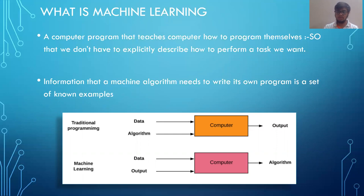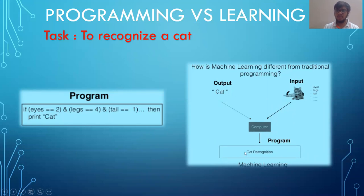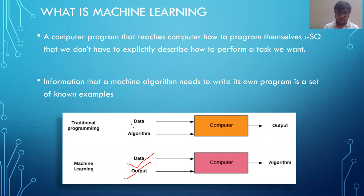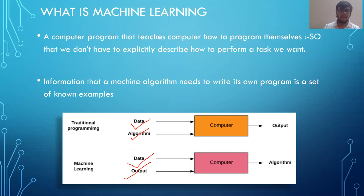The machine learning algorithm — for example, cat recognition — requires writing a program. That program has a set of known examples, just like a newborn kid needs examples to learn from. The input to machine learning is data. This is totally different from traditional: in traditional, you give data and an algorithm — for example, to sort a list of 10 numbers, you give the list as input and define a logic like check two numbers then check the next two. Defining that logic is the algorithm, and it gives you the sorted result.